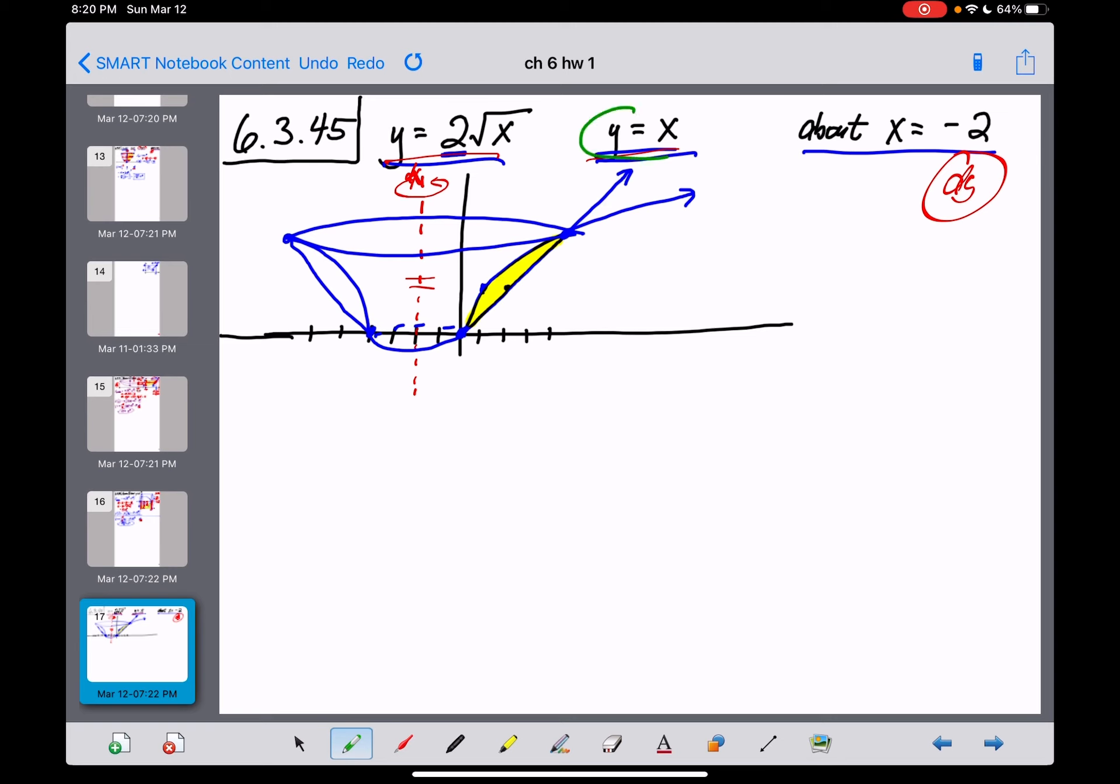So actually, this one already is solved for x. x is equal to y. This one right here, let's take a look. We'd get square root of x is equal to one-half y. And then when we squared both sides here, we'll get x is equal to one-fourth y squared. And that's what that one will look like.